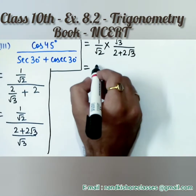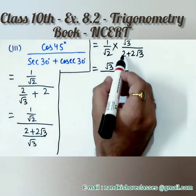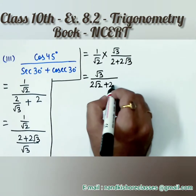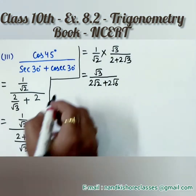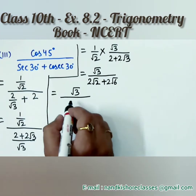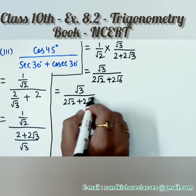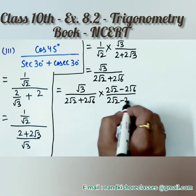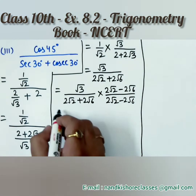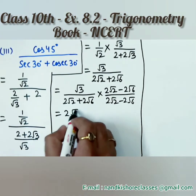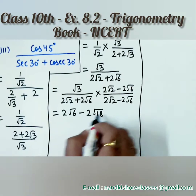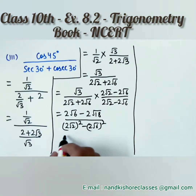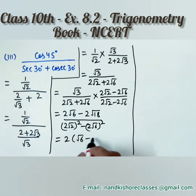Next step: root 3 comes up to the numerator, giving root 3 over (2 root 2 + 2 root 6) after multiplying. Root 3 times root 2 is root 6, and 2 times root 2 is 2 root 2. To simplify, we rationalize by multiplying numerator and denominator by (2 root 2 − 2 root 6). Expanding the numerator gives 2 root 6 minus 2 times root 18.